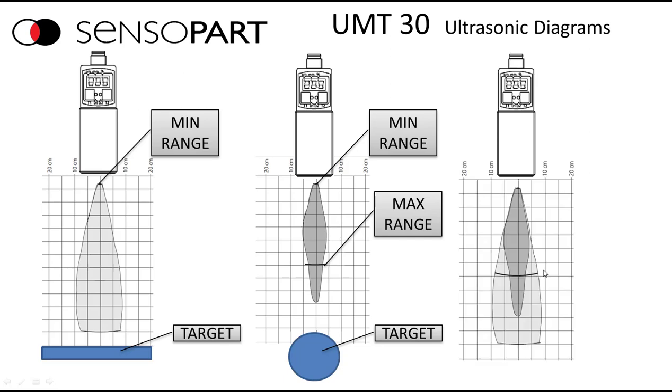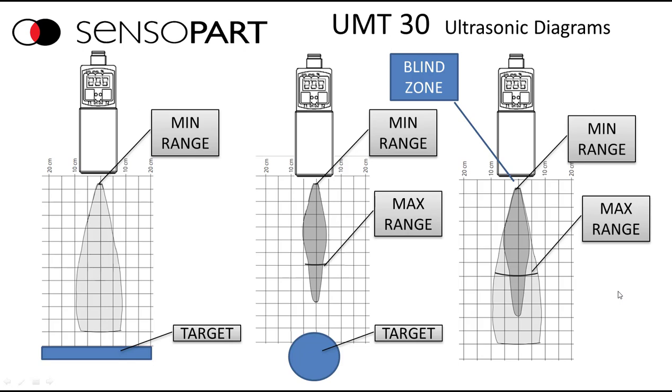And this is the combined diagram that we publish. It has both the light gray and dark gray superimposed with the maximum published range and the minimum range. There is this blind zone in front of the sensor. You have to send the pulse out to hear the echo back.